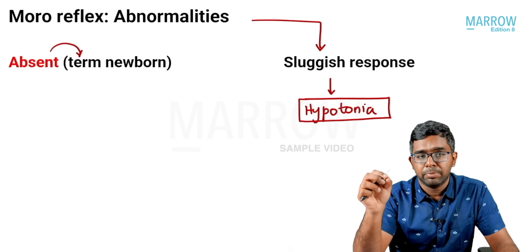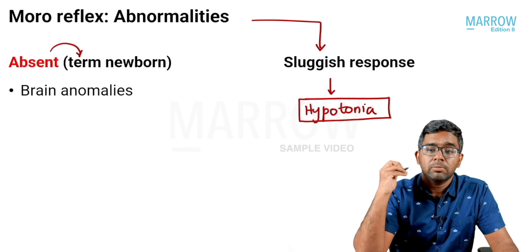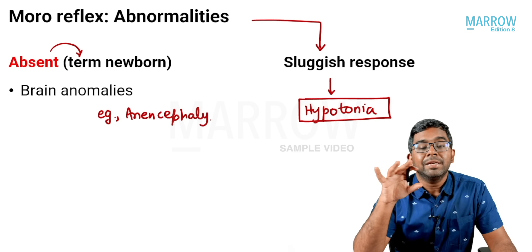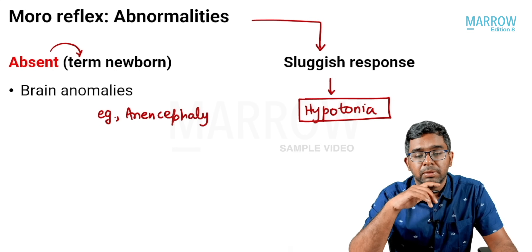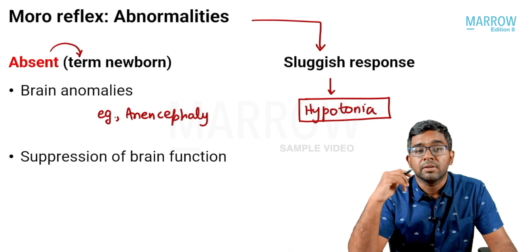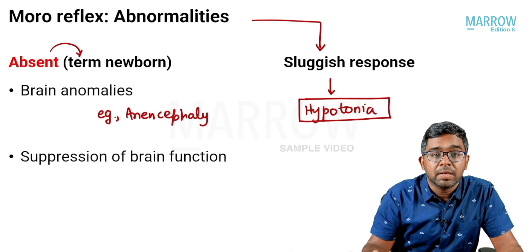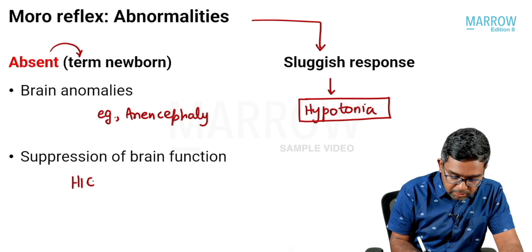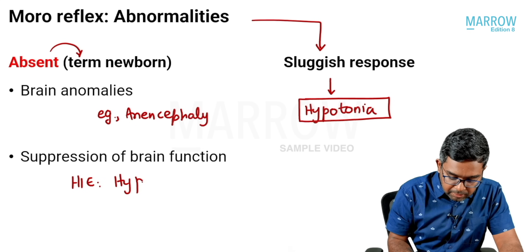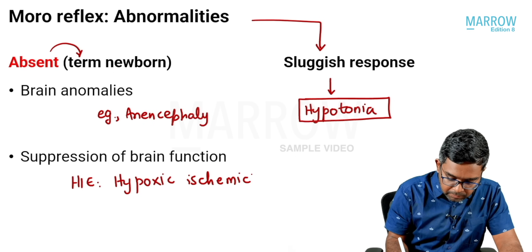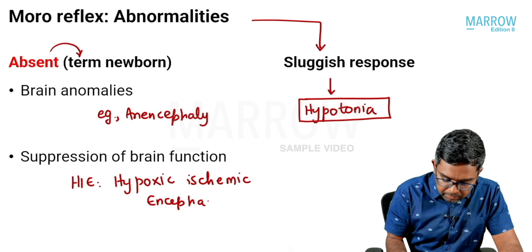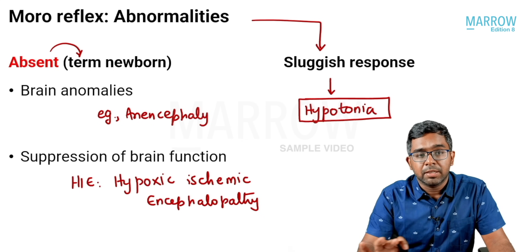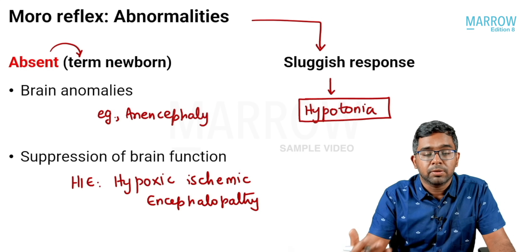That brain problem could be a structural anomaly — for example, anencephaly — or a condition where the brain is present but not functioning normally, such as suppression of brain function due to hypoxia. That condition is HIE — hypoxic ischemic encephalopathy — which can cause absent Moro reflex and will be discussed in detail shortly.